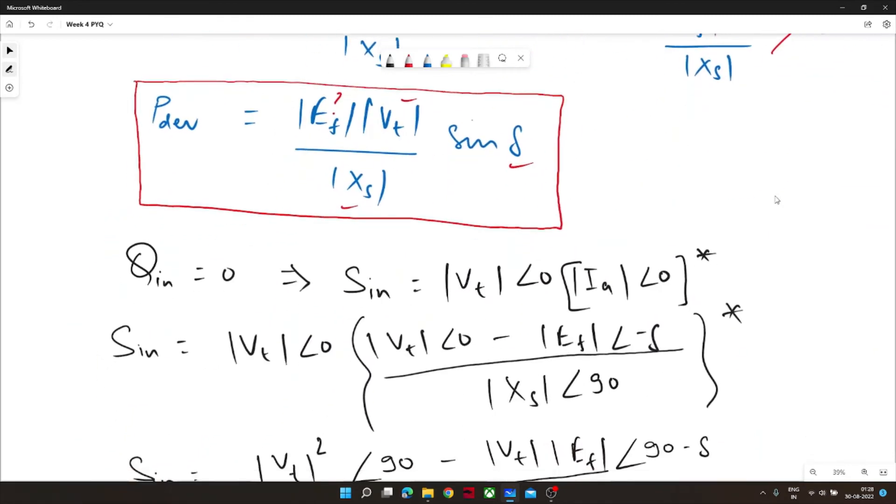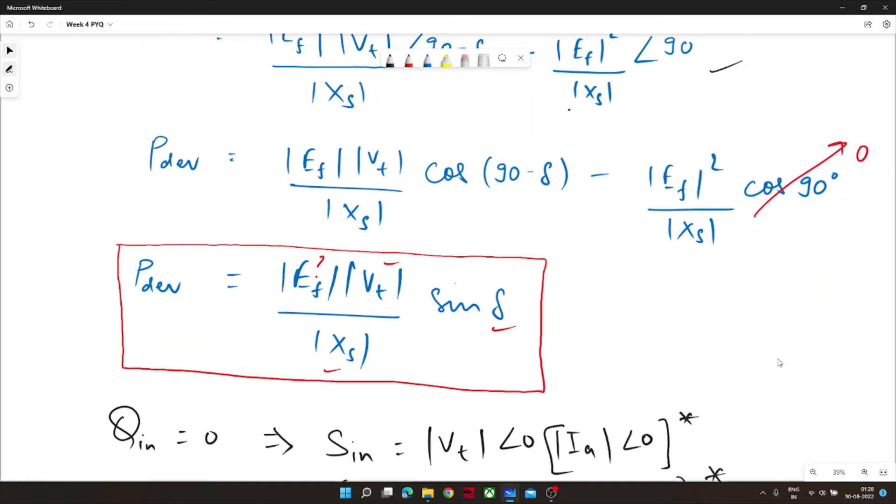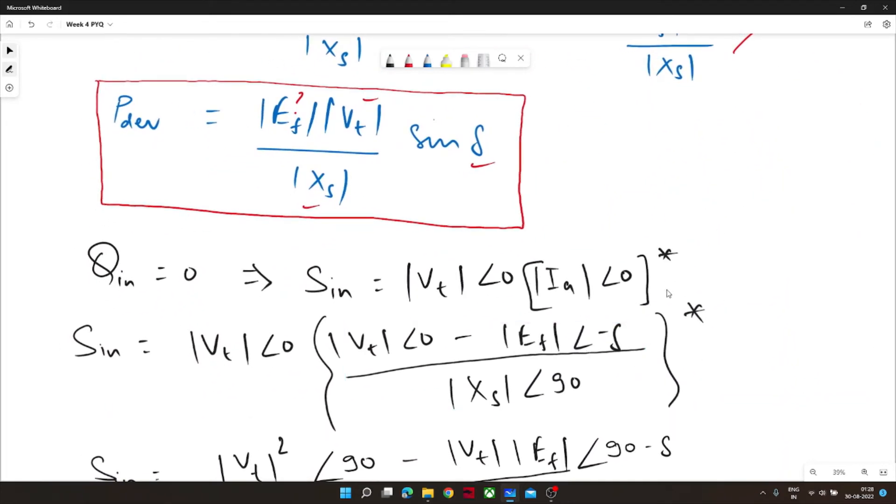So again we don't need to remember any formulae. We know that at input side voltage is V_t and current is I_a. Now apparent power is V_t angle zero and I_a angle zero conjugate.